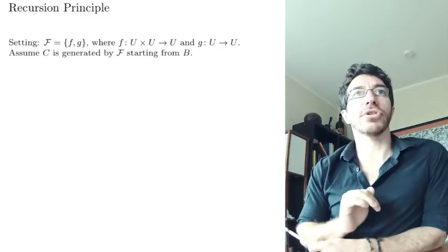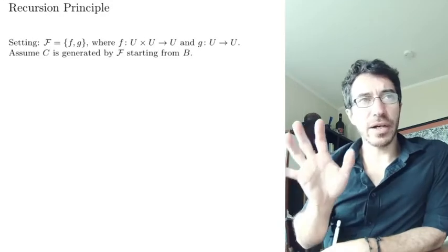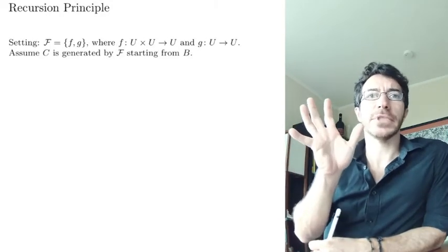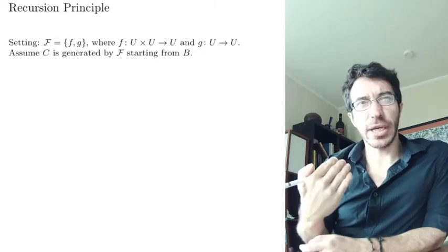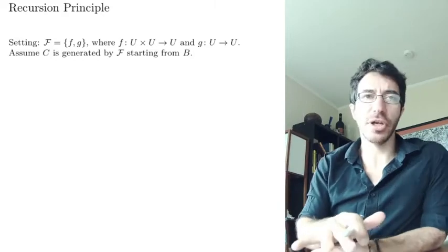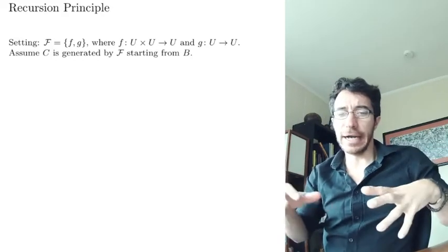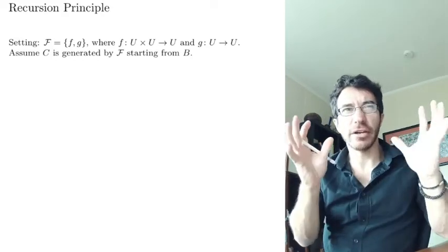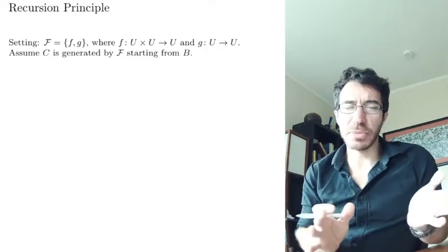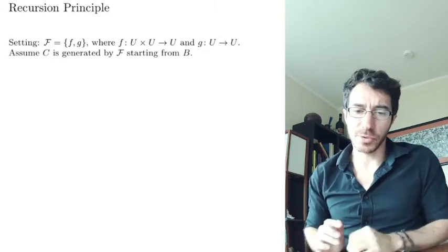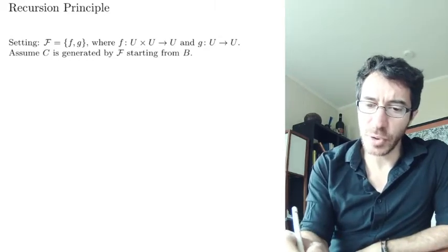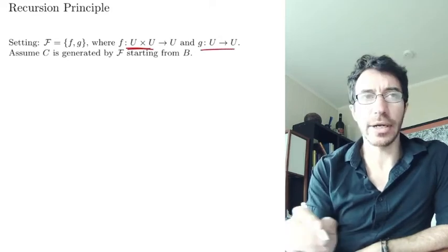Now let's look at recursion. We have the same setting, but we want to simplify the notation a little bit to state the theorem better — otherwise it gets too messy. From this version you should be able to think of the general case. So in this simplified case, we have two functions: F takes two inputs and G takes only one input. And then we have a set V.